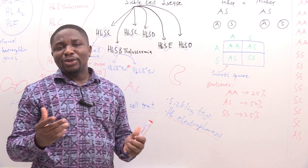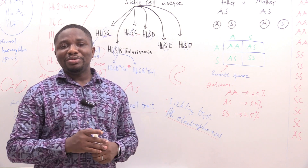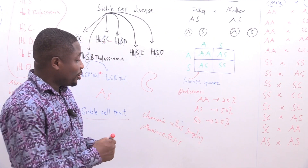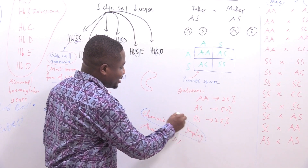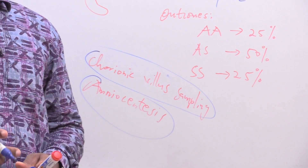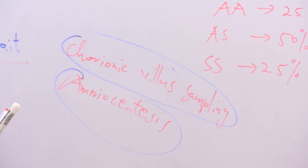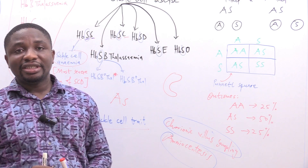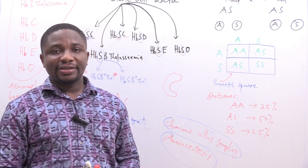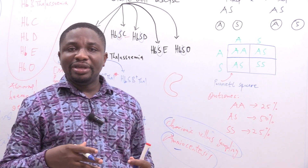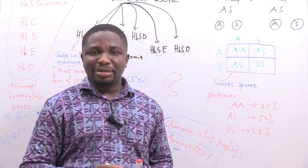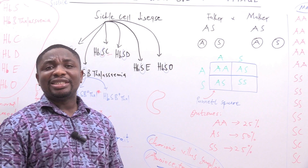How would you know the sickle cell genotype of your unborn baby? There are tests that can be done antenatally. We have chorionic villous sampling and amniocentesis. These two tests can be done before your baby is born to determine whether they have sickle cell disease. For chorionic villous sampling, a piece of the placenta is taken and a genetic test is performed. For amniocentesis, the amniotic fluid surrounding the baby in the womb is taken and tested genetically.